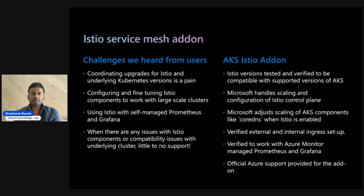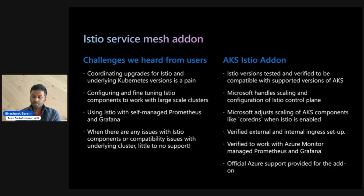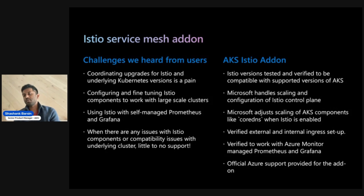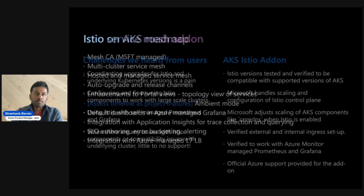On observability — you can use the Istio add-on with self-managed Prometheus and Grafana, but we've also verified it works with Azure Managed Prometheus and Grafana. For issues with Istio components we deploy from a managed perspective — for instance, there's a job we run that detects root or intermediate certificate authority changes and helps restart Istiod. If there's an issue with that job or any other add-on managed component, we provide official support. With self-managed Istio you rely on community support via GitHub issues; with the add-on you can create an actual support ticket and we have support processes in place to help you.